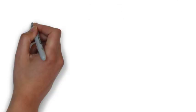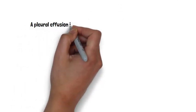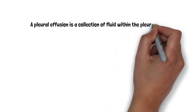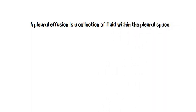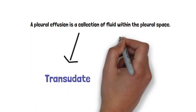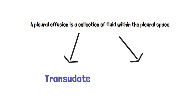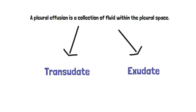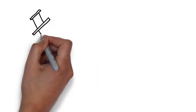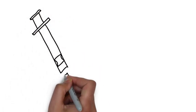So let's start with the basics. What is a pleural effusion? Well by definition a pleural effusion is a collection of fluid within the pleural space and pleural effusions can be transudate or exudate. So how do we determine whether the pleural effusion is transudate or exudate?